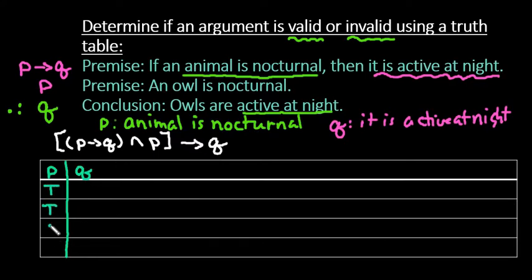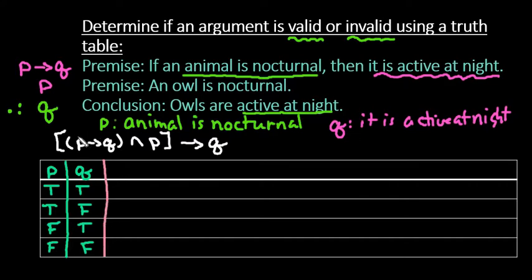Just like any truth table, you always start with the two statements that you have. P and Q are going to represent our two statements, and we start with the same pattern: true, true, false, false for the first statement, and true, false, true, false for the second statement. Then we start adding columns to represent all of the things that we need. Our first group is we need an if P, then Q column — an implication or conditional column.